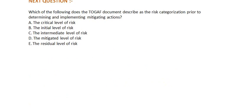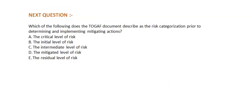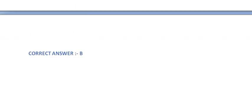Next question: Which of the following does the TOGAF document describe as the risk categorization prior to determining and implementing mitigating actions? Option A: The critical level of risk. Option B: The initial level of risk. Option C: The intermediate level of risk. Option D: The mitigated level of risk. Option E: The residual level of risk. The correct answer is Option B.